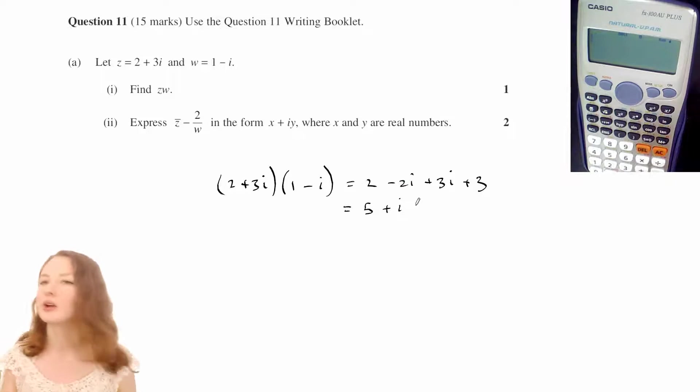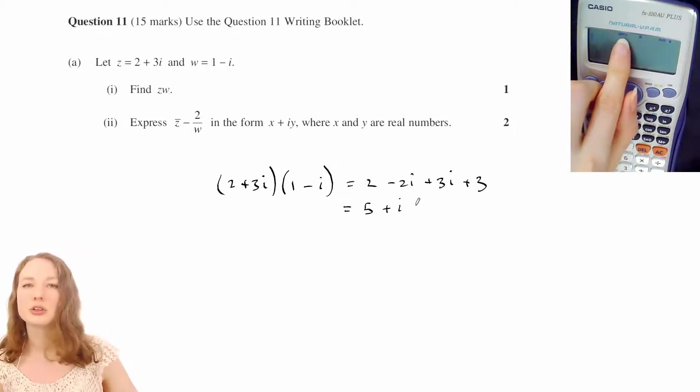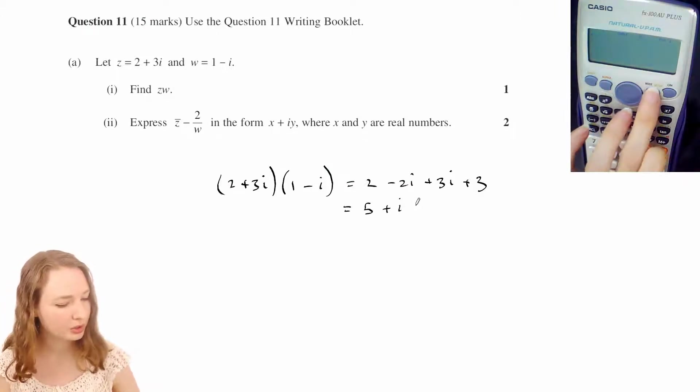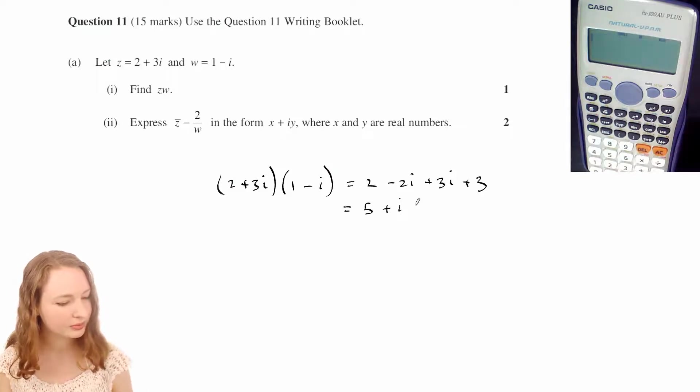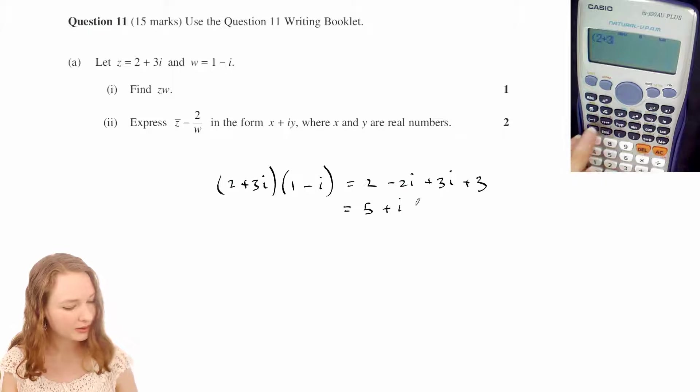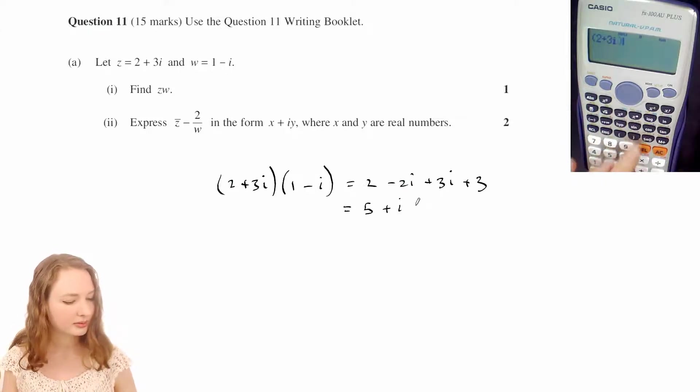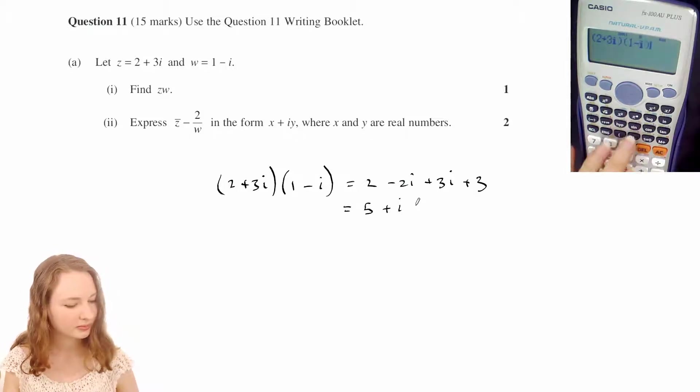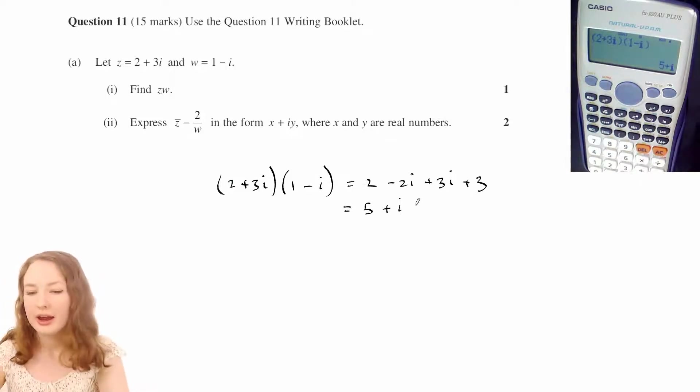So let's check that out in the calculator as well. I've already got it in complex mode as you can see there, but if your calculator isn't, you can put it into complex mode by hitting mode and then 2. And then we want 2 plus 3i, the i button is right there, and then that times 1 minus i, which is 5 plus i.